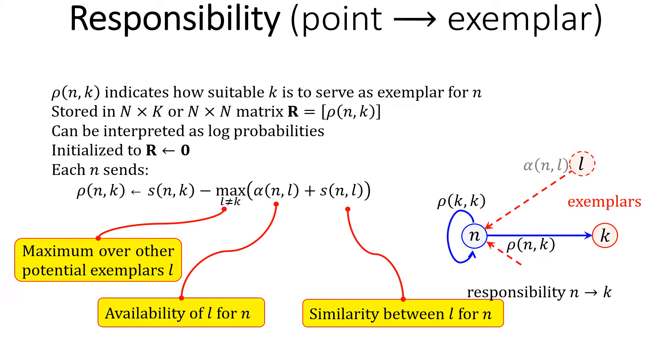The one which is best suited to serve as an exemplar of n other than k itself. Availability alpha_nk shows how suitable k is for point n compared to other potential exemplars.